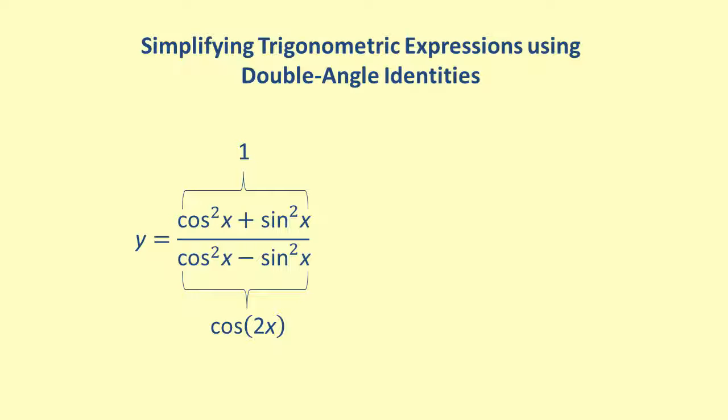Accordingly, this expression simplifies to 1 over the cosine of 2x, which is secant of 2 times x. Thus, we get y equals secant of 2x.